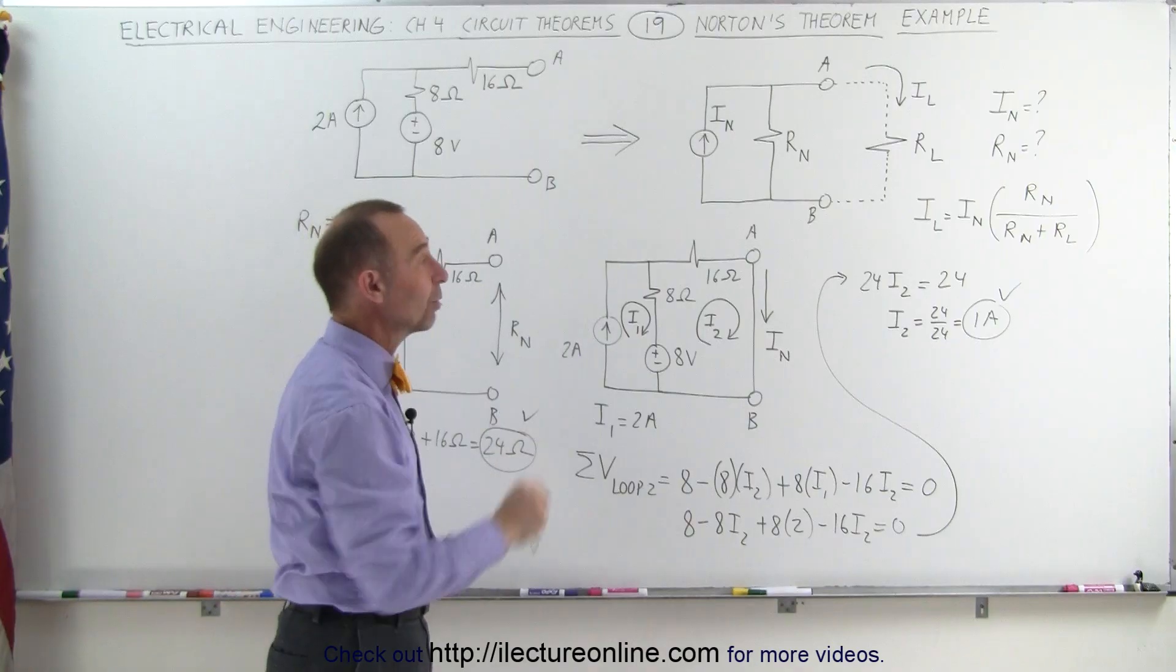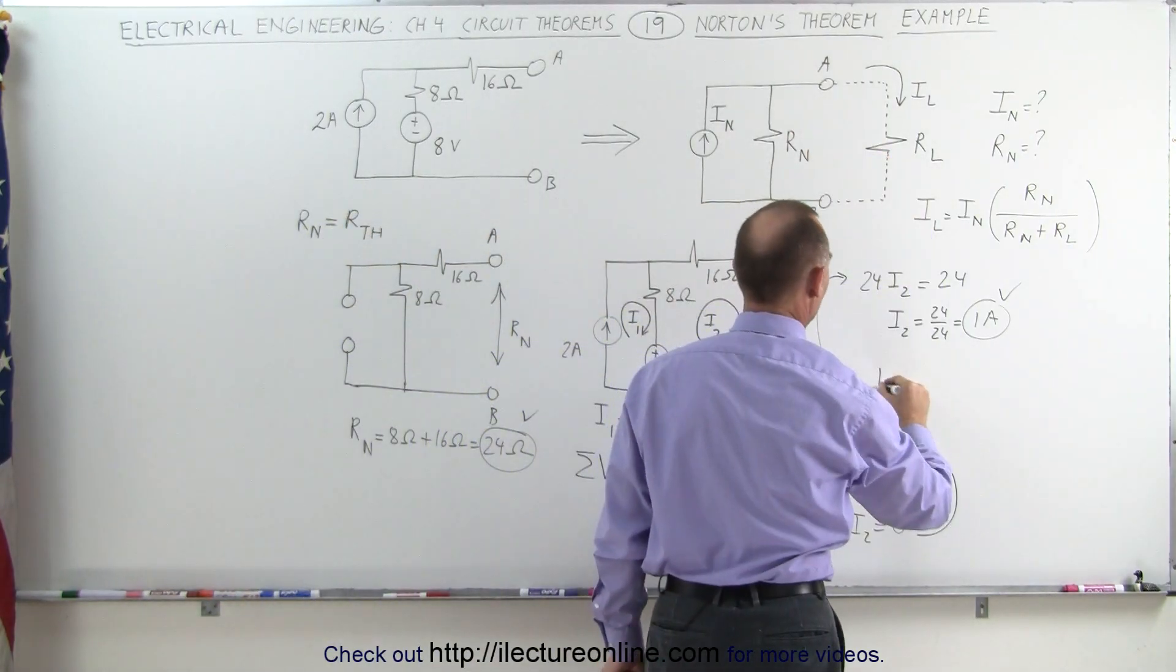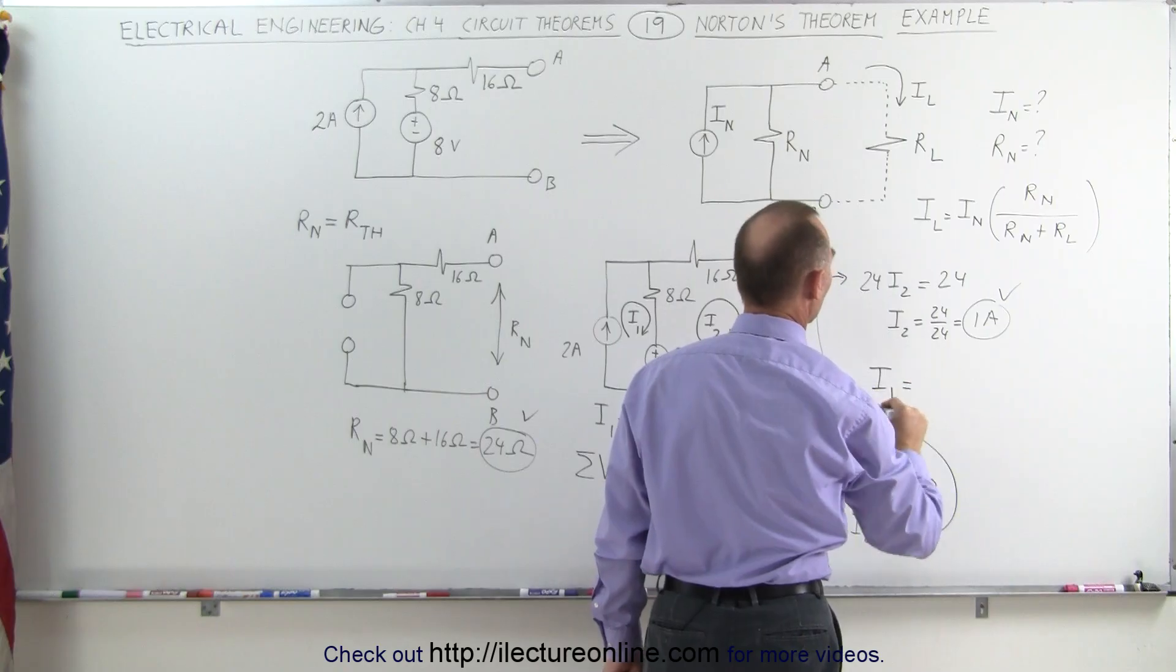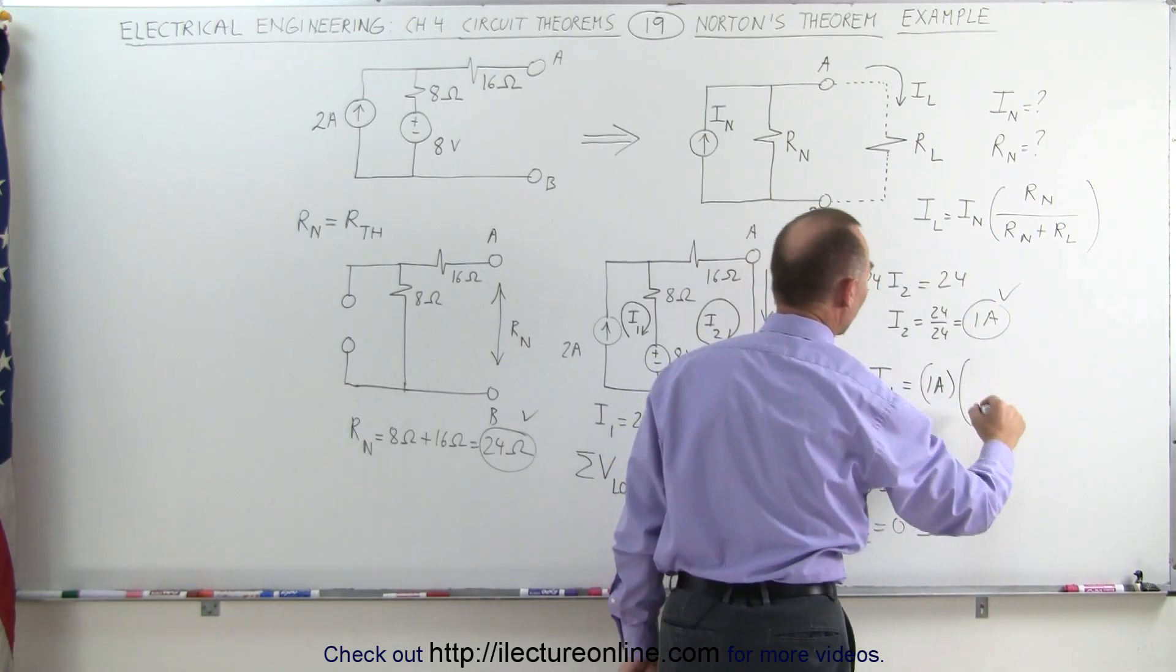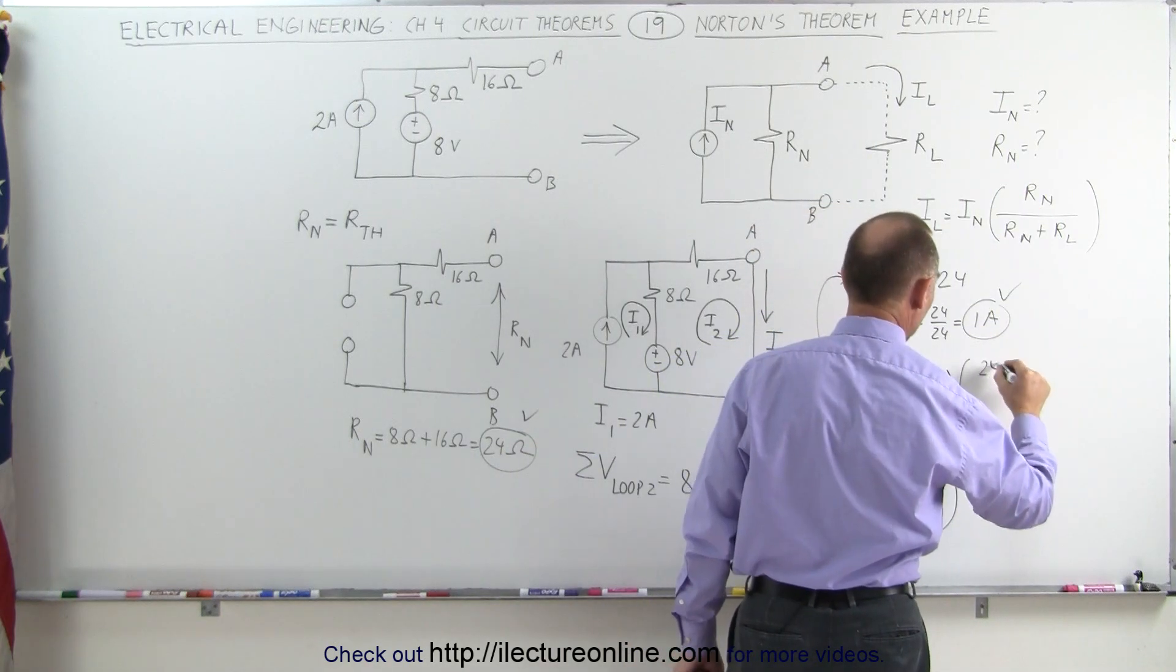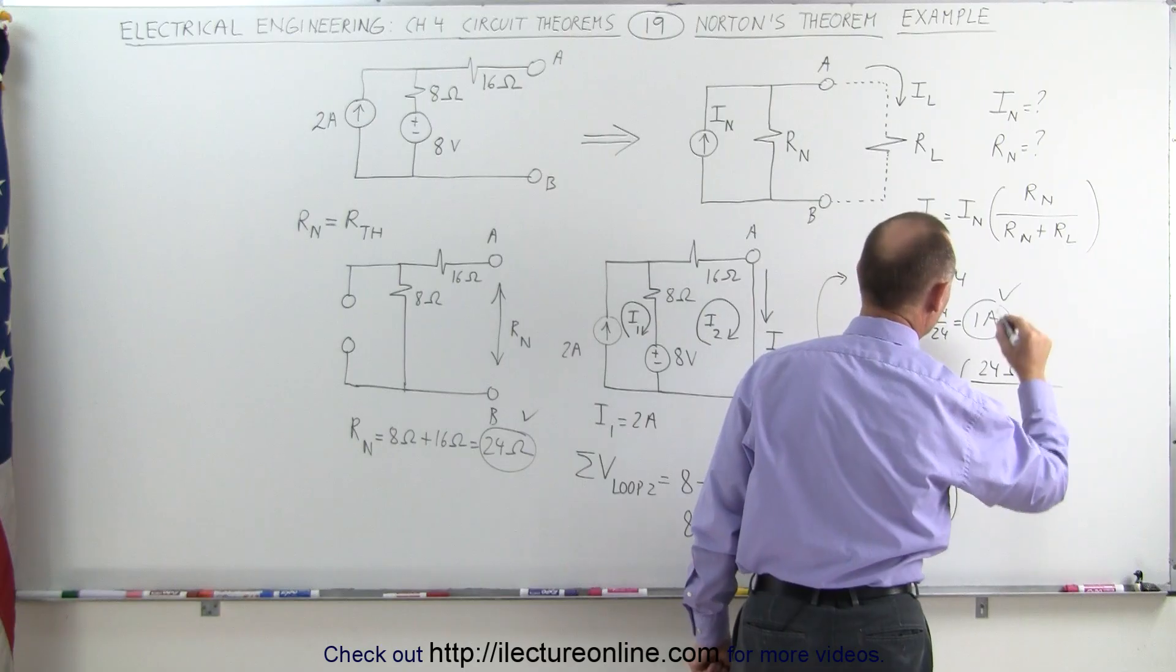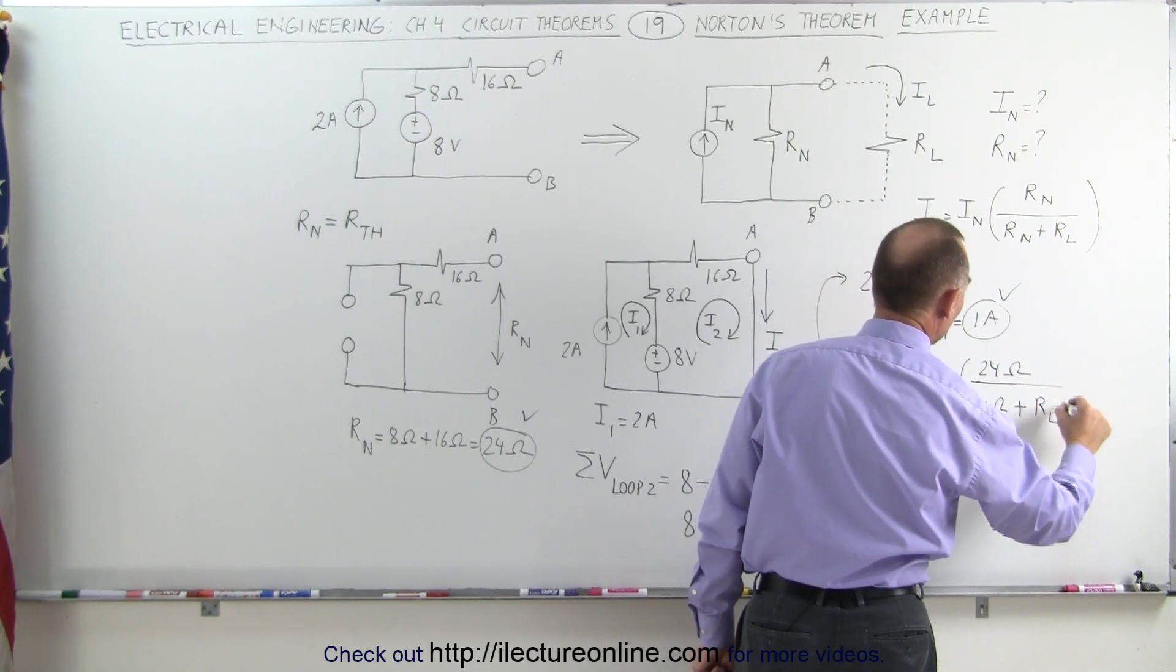I can now plug those values into my original equation to calculate the current to my load resistor. I sub L, the current to the load, is equal to I sub N, which is 1 amp, times the ratio of R sub N, which we said was 24 ohms, divided by 24 ohms, plus whatever the load resistor is.